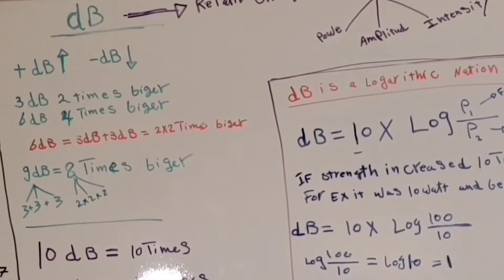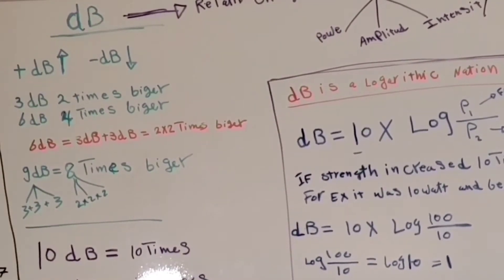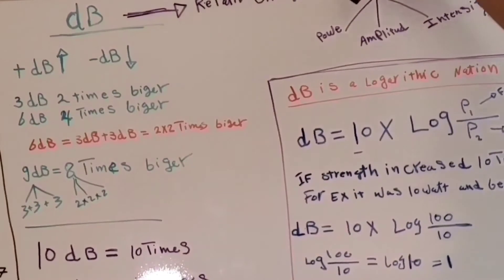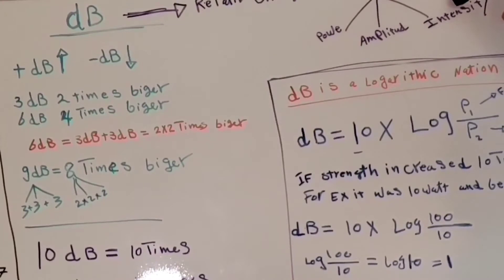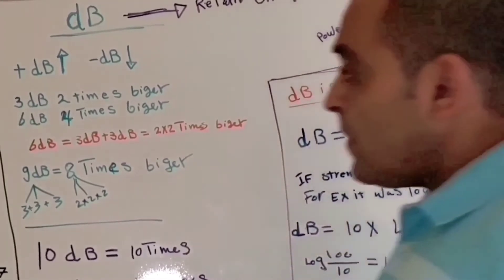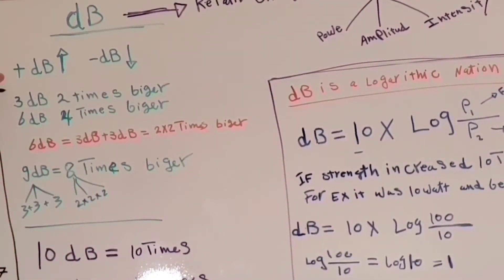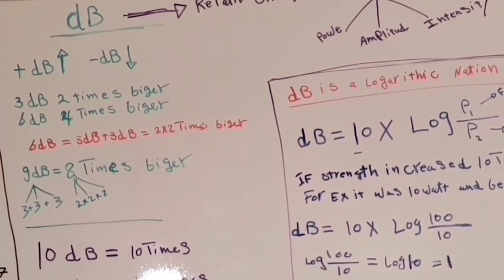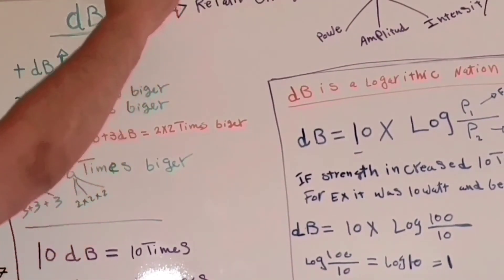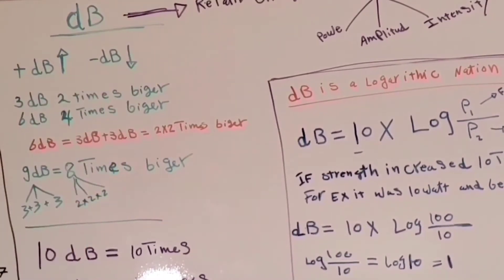Now we'll move on and talk about the decibel. The decibel is a relative measure of the change in strength. In ultrasound, the strength consists of power, amplitude, and intensity. If the change in strength is increasing, the decibel will be positive. If the change is decreasing, it will be a negative decibel.